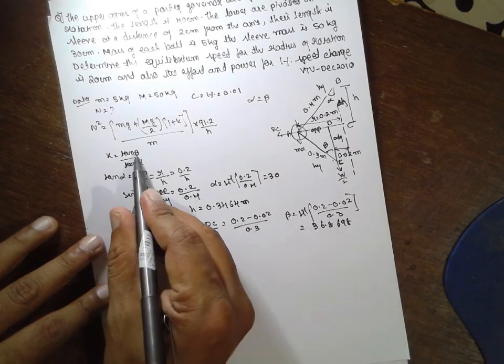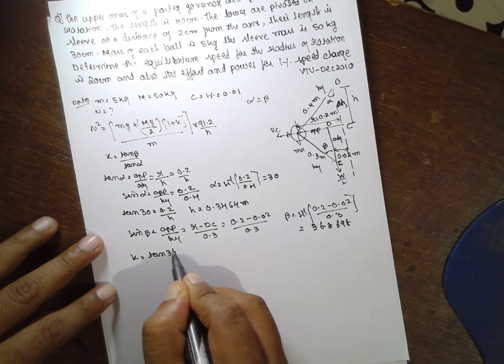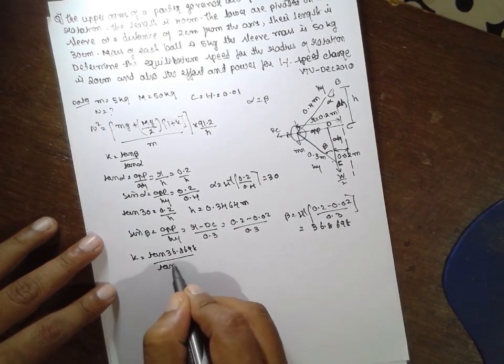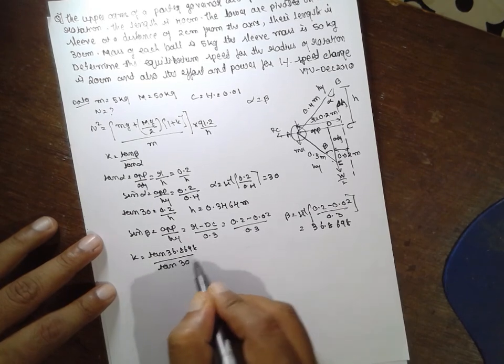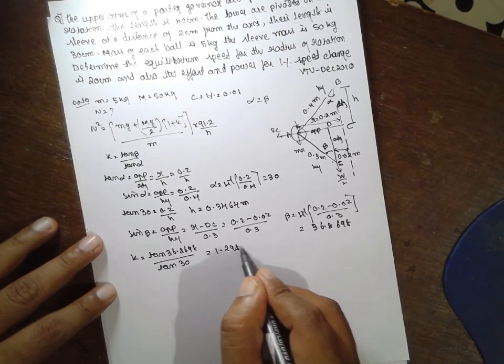Substitute here beta. Now k is equal to tan beta divided by tan alpha. Alpha is nothing but 30. The value obtained is 1.298, approximately 1.3.